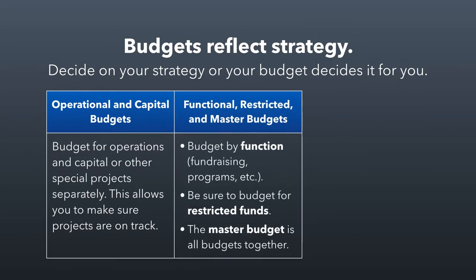Another way that budgets are divided is by function and also by restricted funds. Functional budgets — budgets broken up by department — mean that all your fundraising activities have a budget, your programs have a budget, and anything else with a functional purpose within your organization is budgeted separately. If you have restricted funds, you should be budgeting for those separately, making sure you can describe where they're coming from and where they're going.